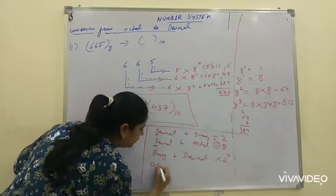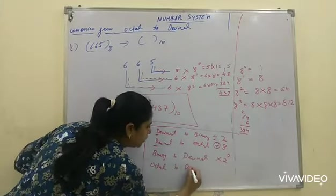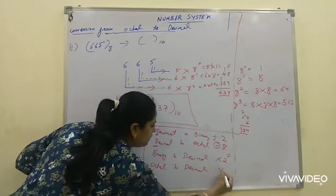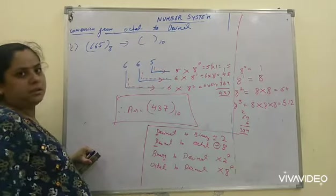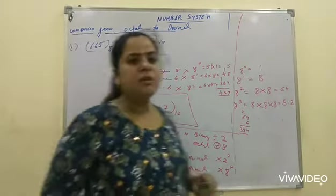And octal to decimal we multiply by 8 with the power. In this way we will do the conversion.